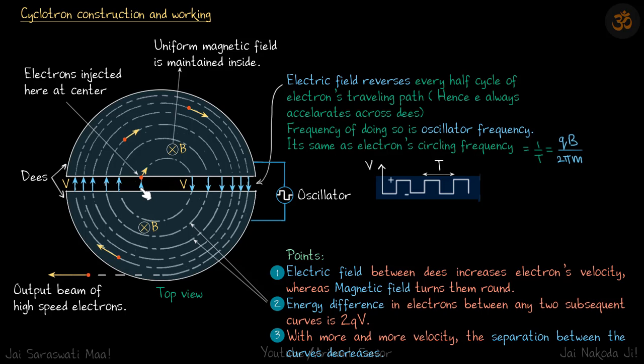Electrons start from the center. They gain some energy here, go here, and again gain some more energy. As they gain more energy, their velocity increases. We know that radius in a magnetic field is proportional to velocity, so the radius will increase. The electron goes in these circular paths until it reaches the outer end and then goes out as an output beam of high-speed electrons.